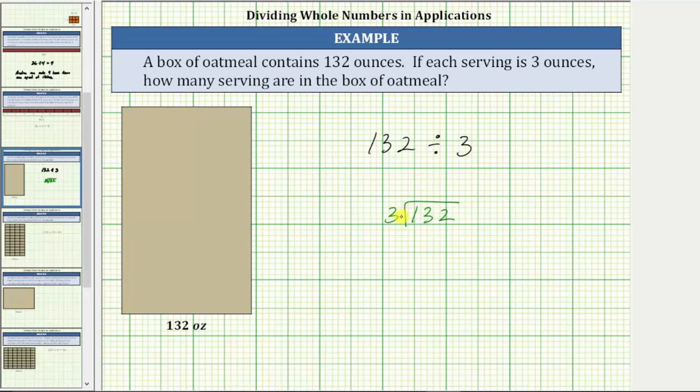We first determine how many threes in 13, which is four. Four times three is 12. We subtract. The difference is one. Bring down the two. Determine how many threes in 12, which we already know is four. Four times three is 12. We subtract, the difference is zero. We now know the quotient is 44.